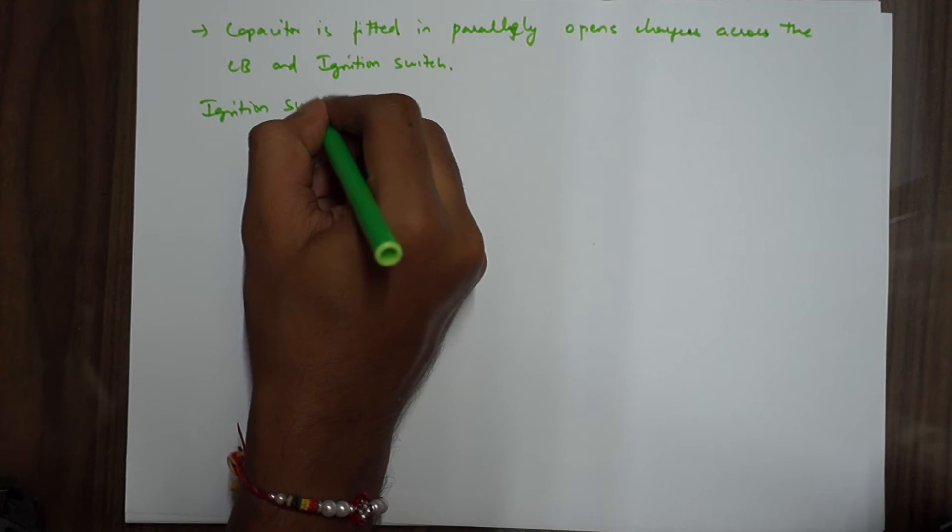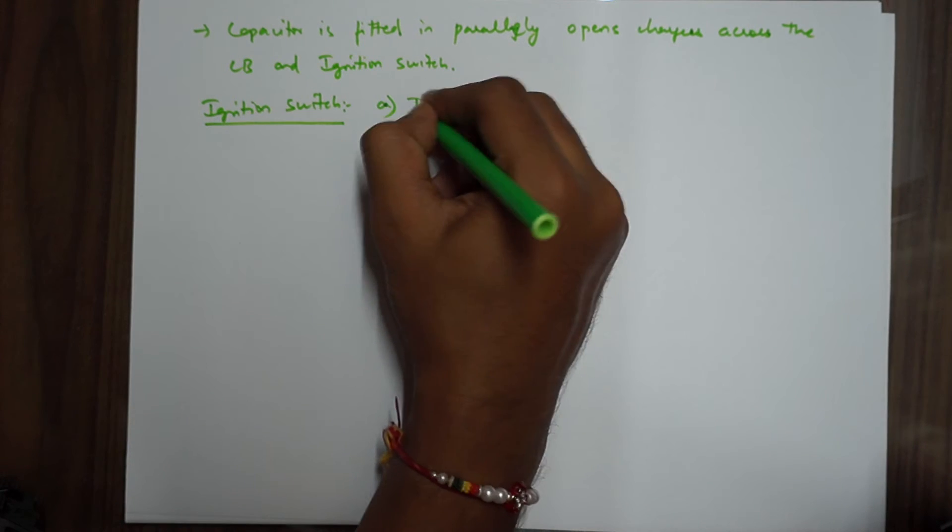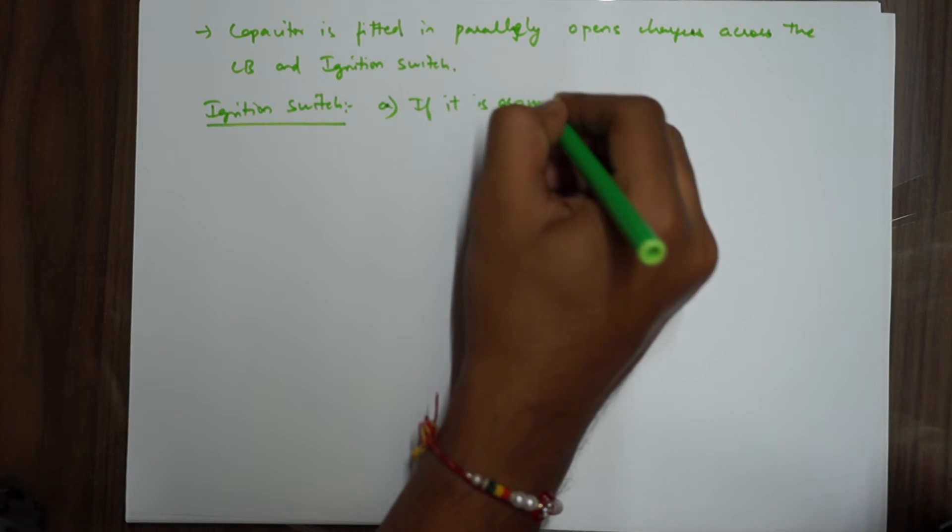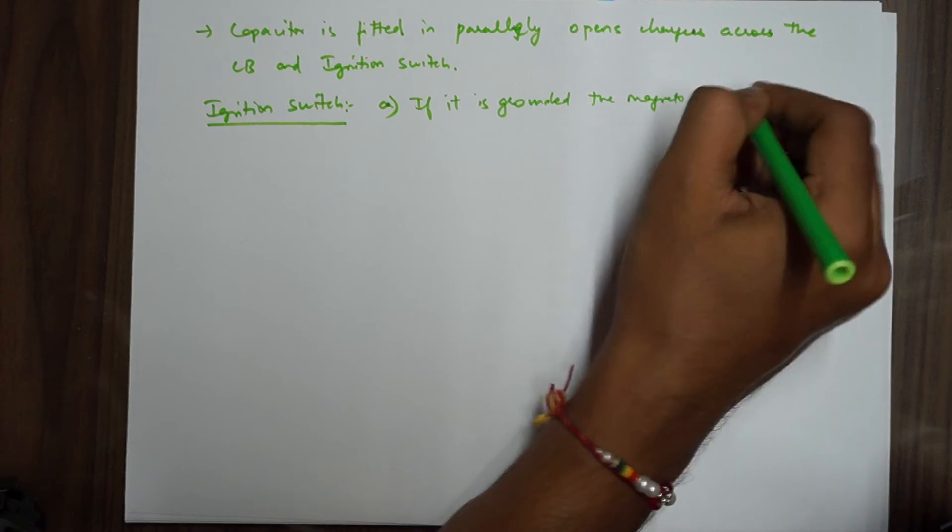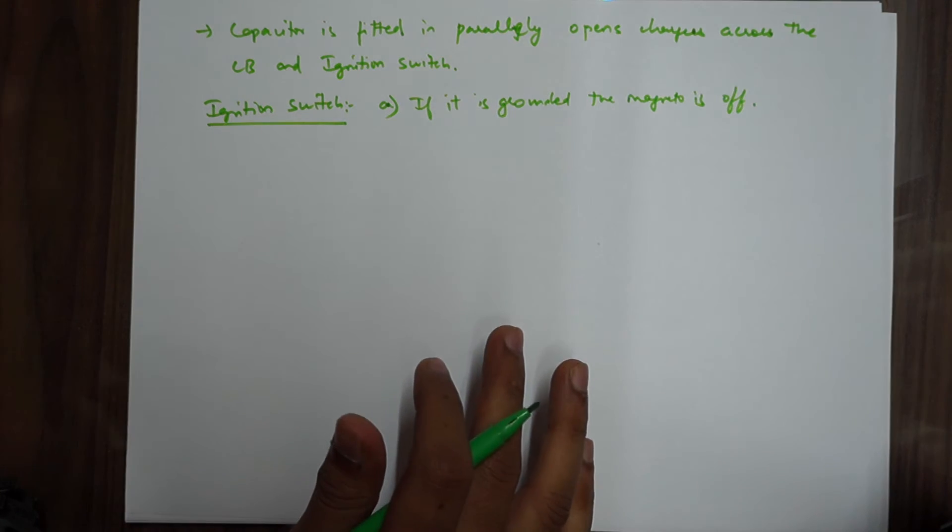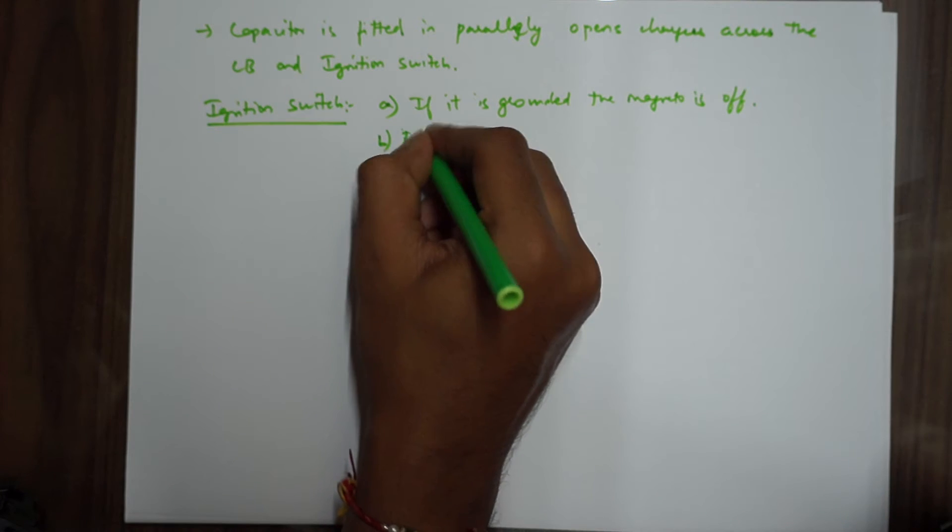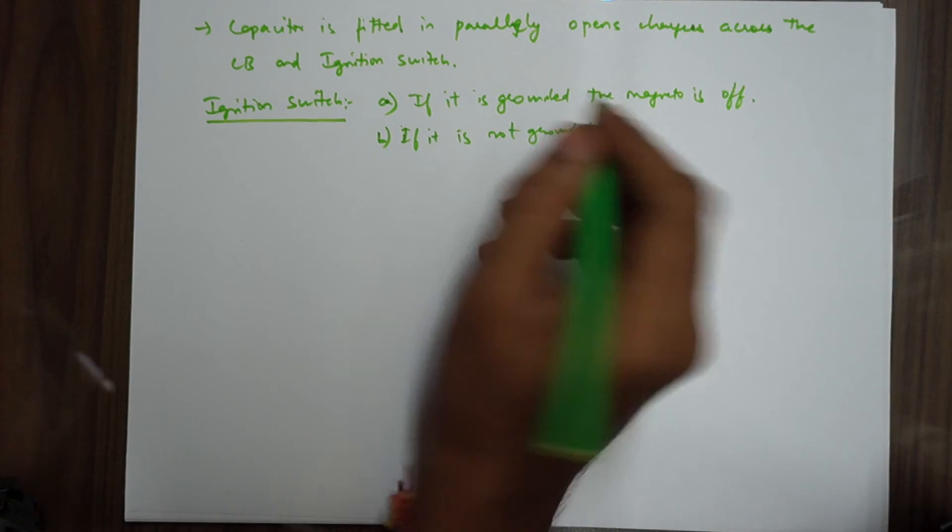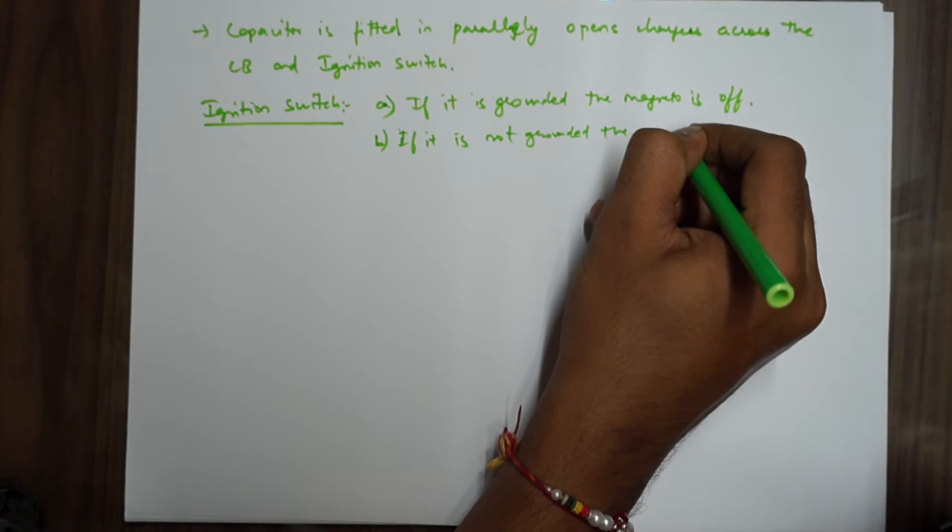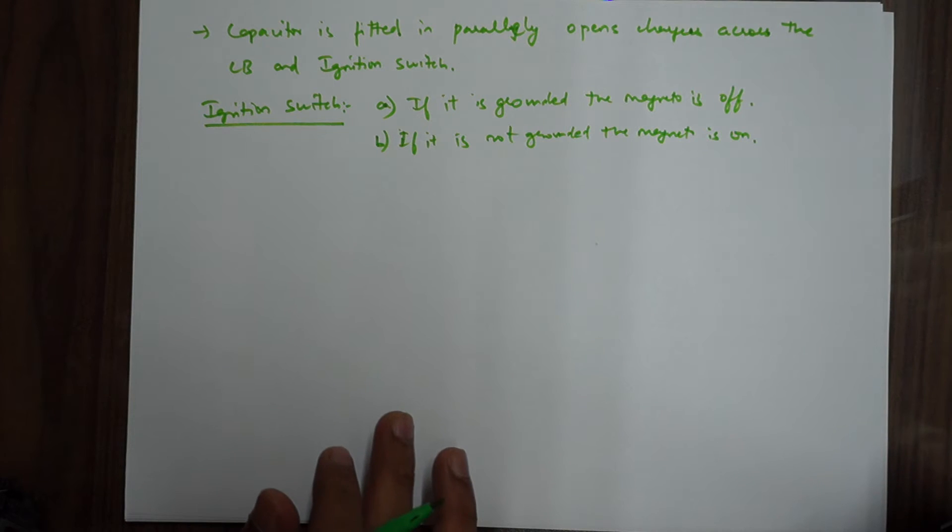Another component we were discussing was the ignition switch. This is as direct as it can be. If it is grounded, the magneto is off because the whole circuit is just grounded directly. And if it is not grounded, the magneto is on. The whole primary and the secondary circuit will work.